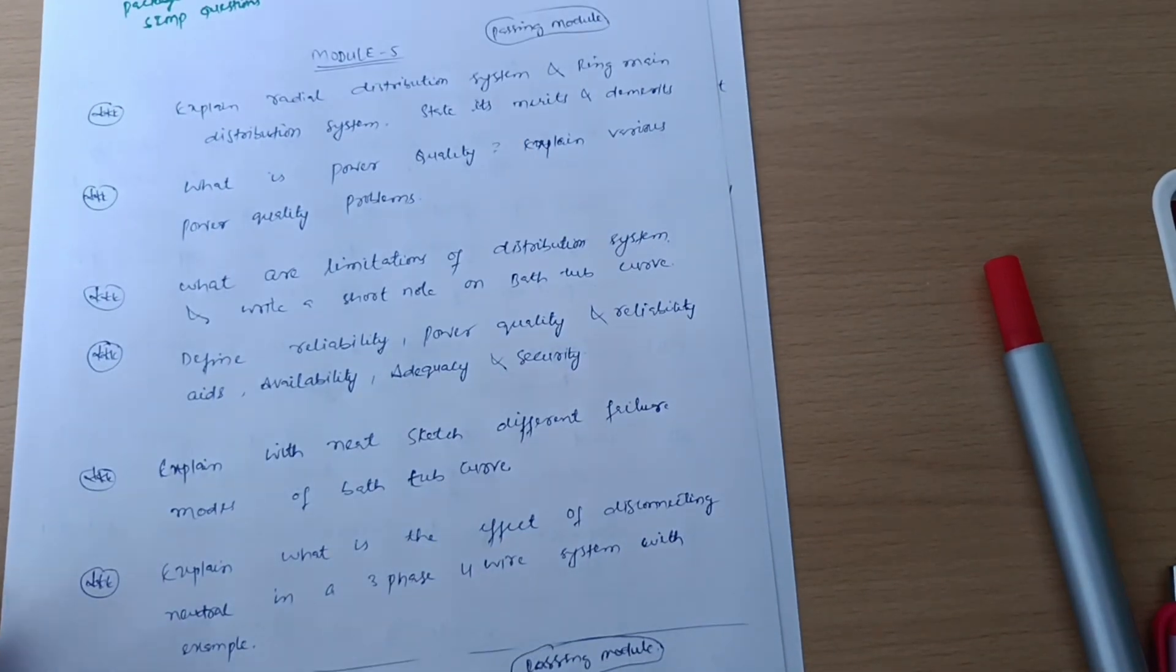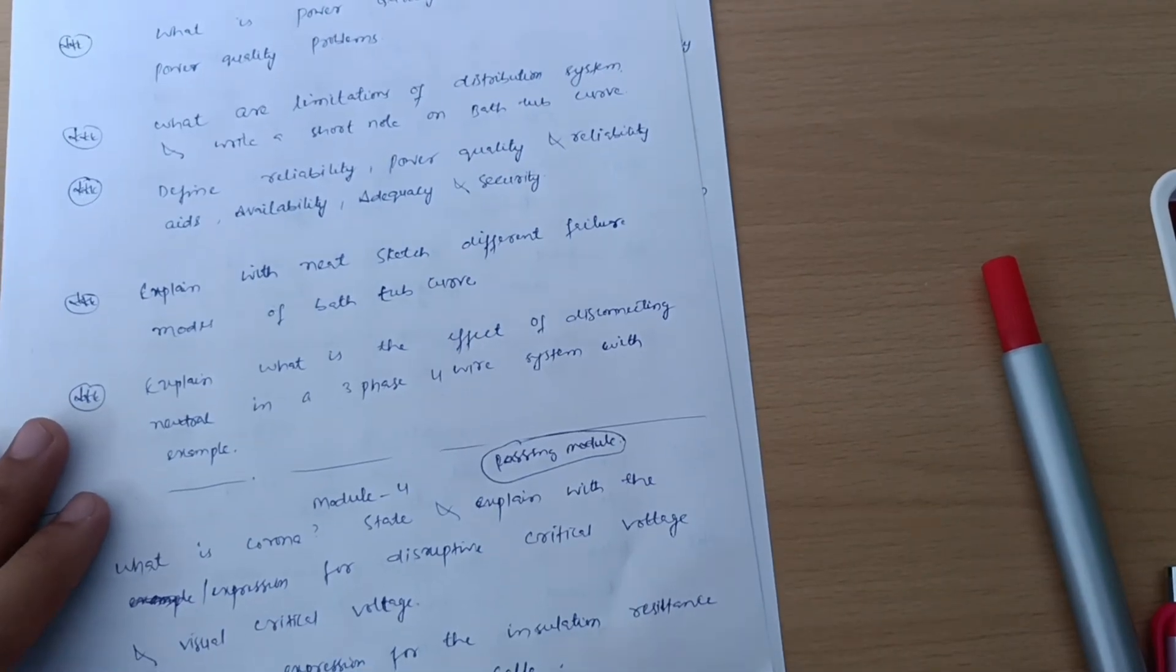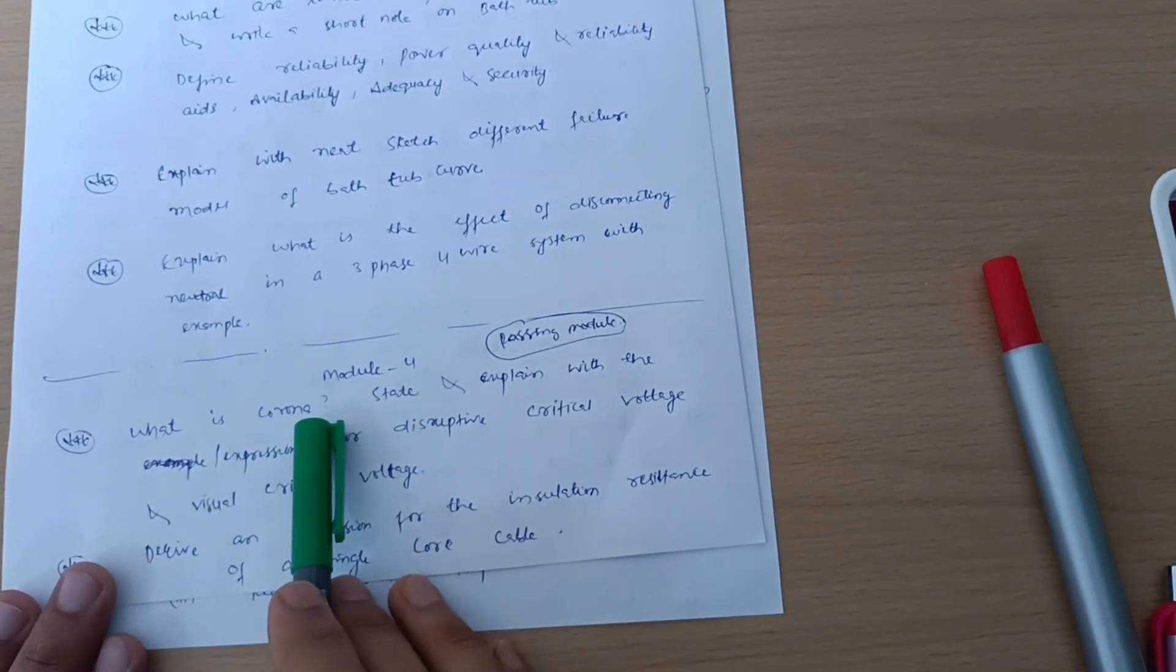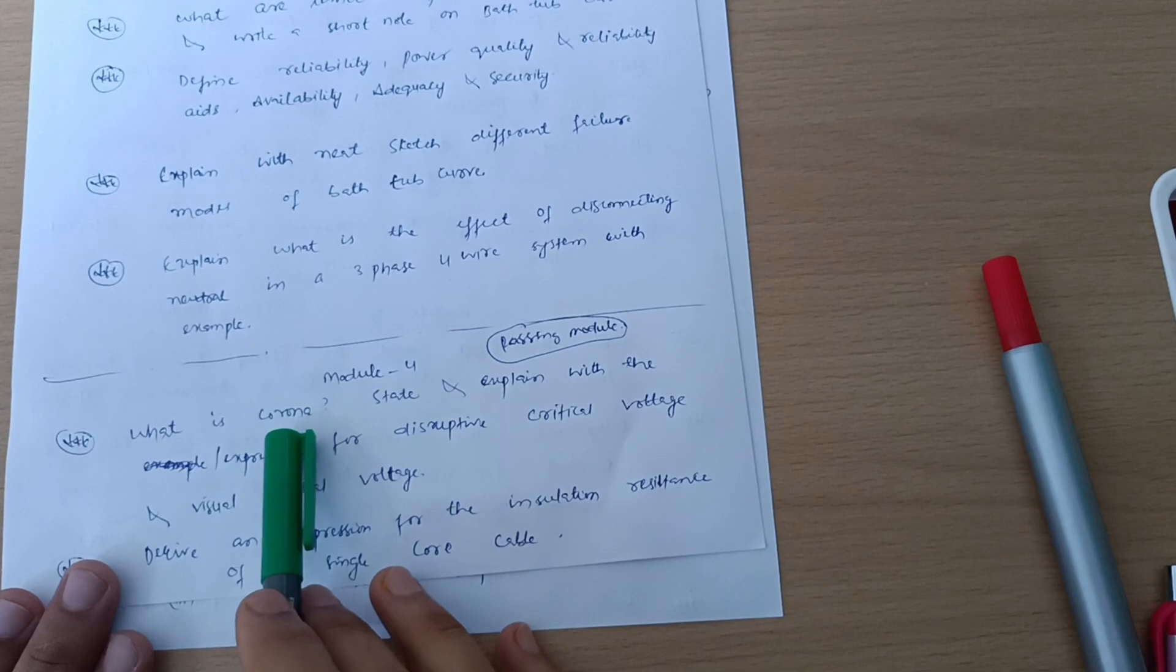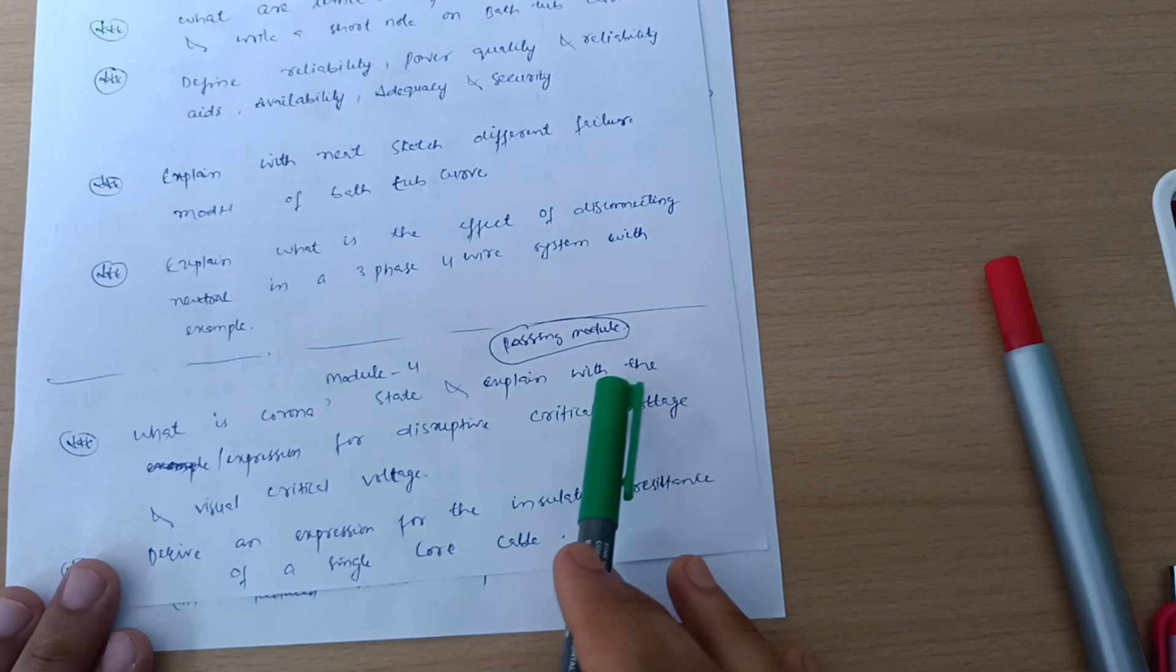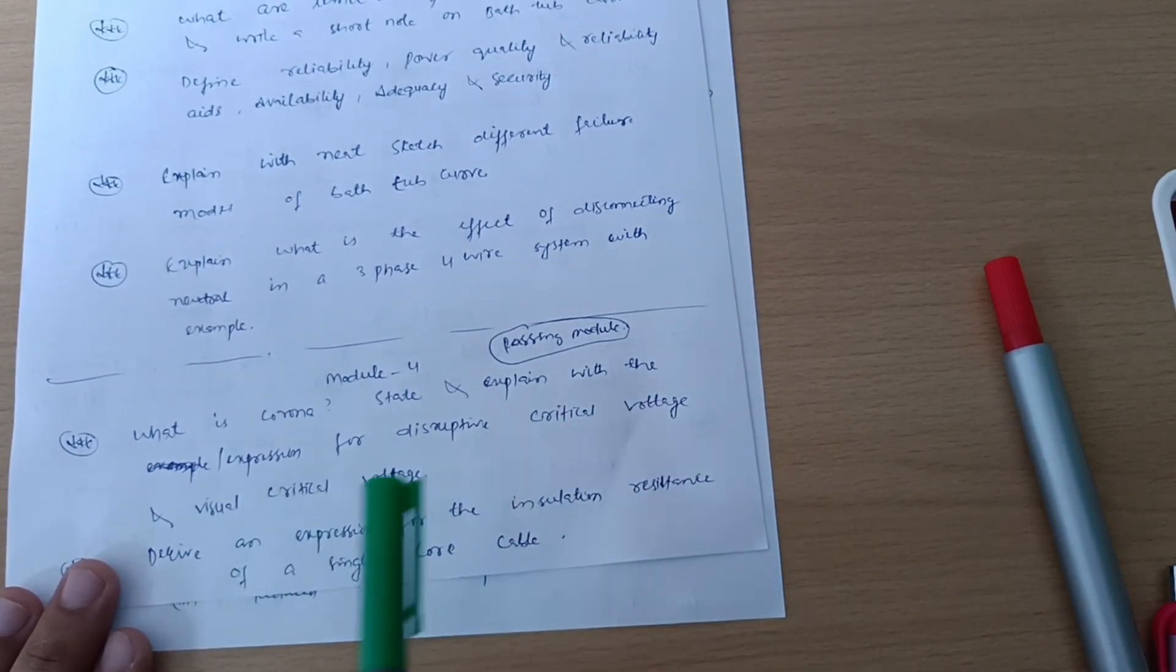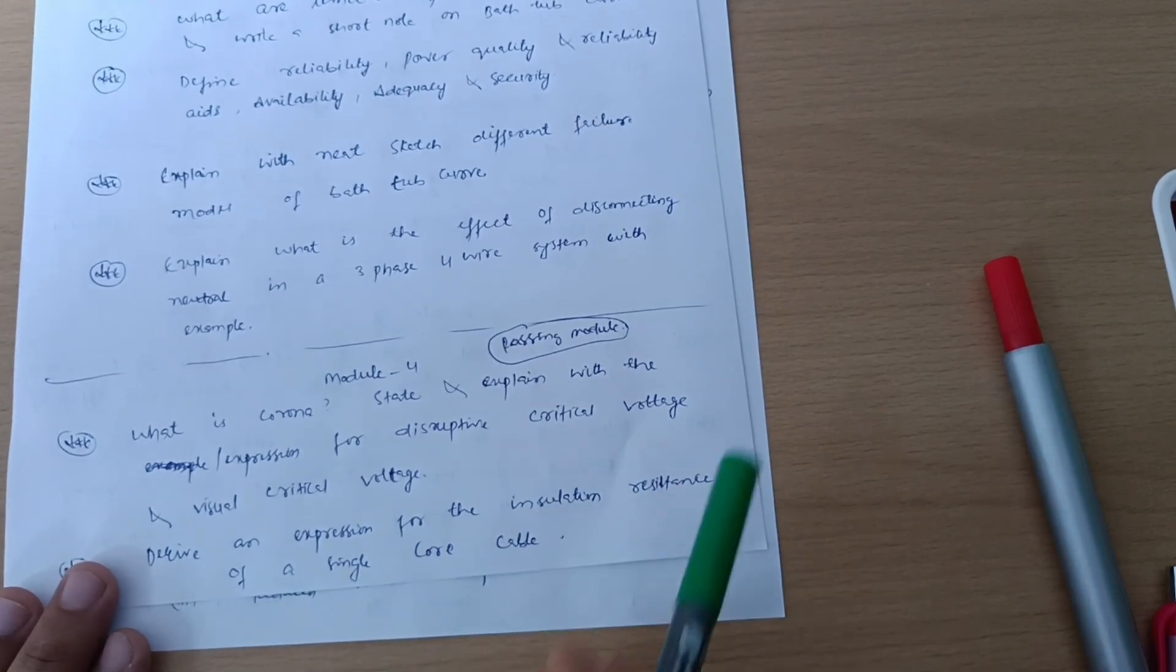Now if I talk about another passing model, that is Module 4, in which we have to cover: what is corona? State and expand with the expression for disruptive critical voltage and visual critical voltage. Derive an expression for the insulation resistance of a single core cable.